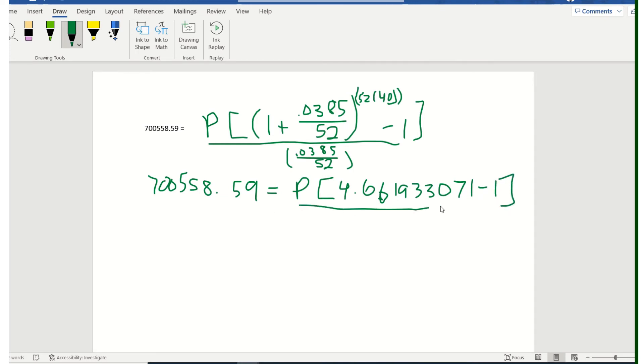And on the bottom, I'll go ahead and divide out that part, 0.0385 divided by 52. And of course, we could have cheated and looked back to what it was on that other sheet, since we've done this calculation before. That is 0.000740385.